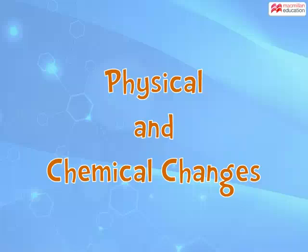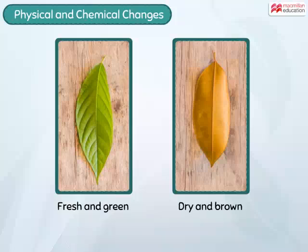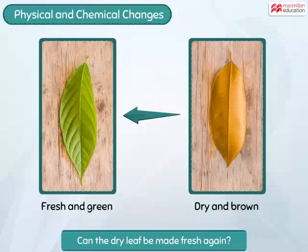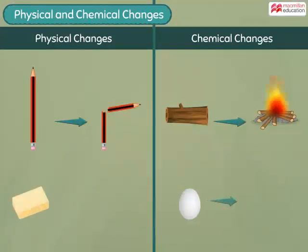Let's look at physical and chemical changes. Look at these leaves — the first leaf is fresh and green while the other is dry and brown. Can we make the dry leaf fresh again? We cannot, because the leaves have undergone a chemical change that cannot be reversed.